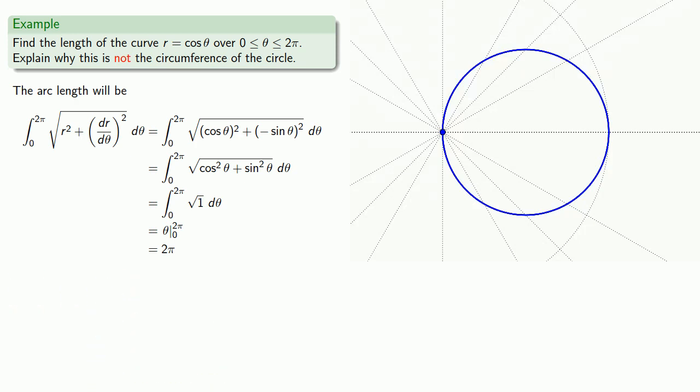To answer this question, we have to go back to the graph of r equals cosine θ over the interval between 0 and 2π. So let's take a closer look at the graph over this interval. And we see that if we graph r equals cosine θ over this interval, we actually trace the circle twice.